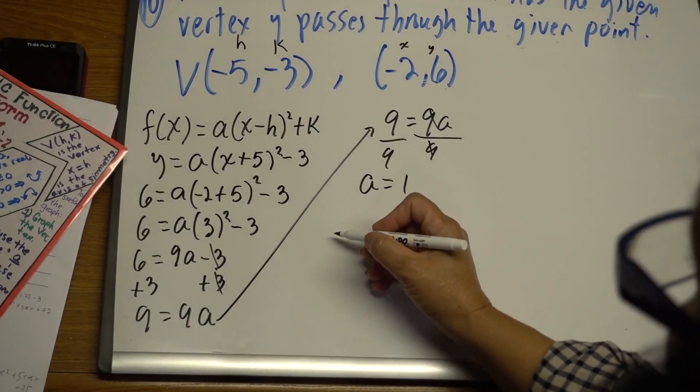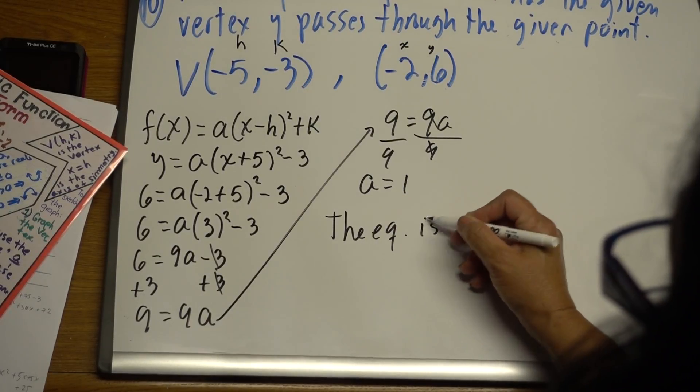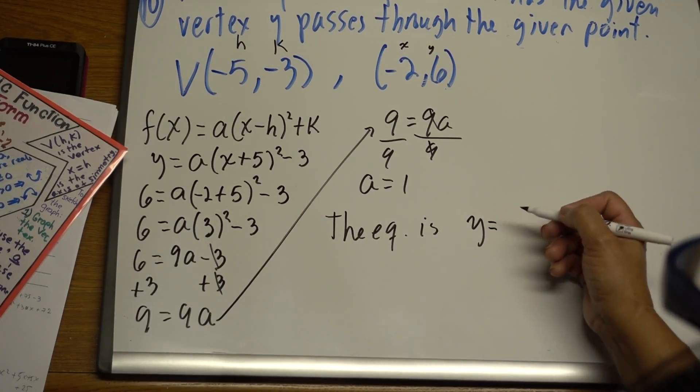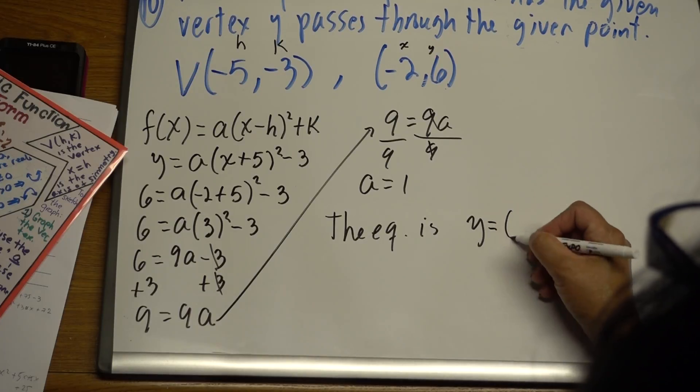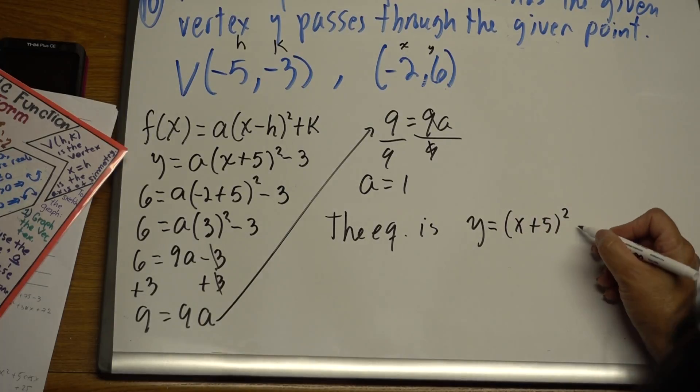So the equation is y equals 1 times x plus 5 squared minus 3.